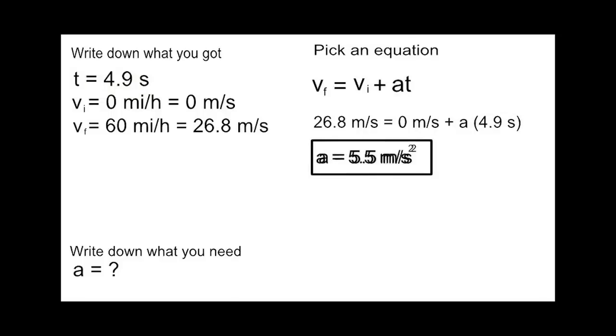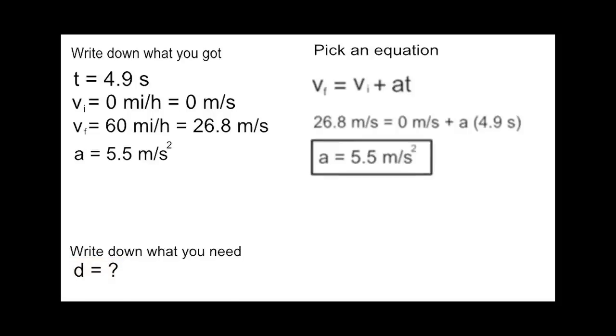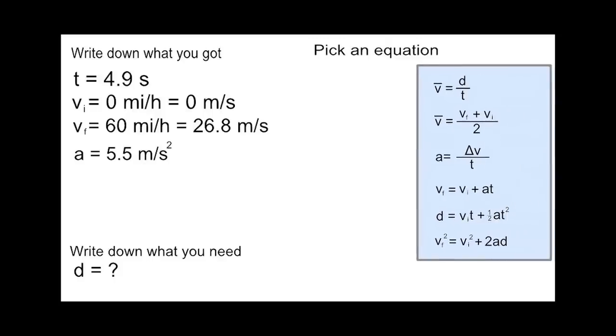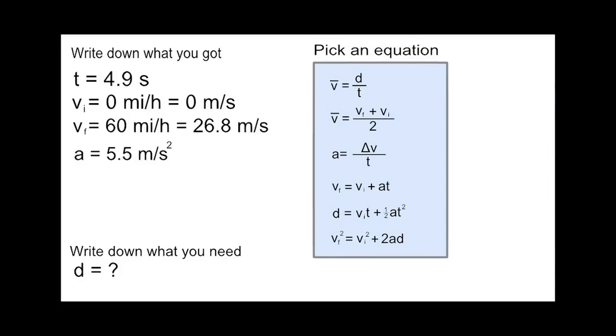But what if we now wanted to find something else, for example, like the distance? Well, now we'd write down what we need: the distance is our unknown. Now we go back and choose an equation. The first formula does have distance; however, we don't have the average velocity so we can't use it. Now we could use this formula to calculate the average velocity and go back and use the former formula, but let's try to do it in one step. Here we already have the acceleration and time, and there's no distance in the formula.